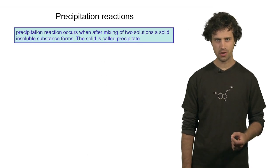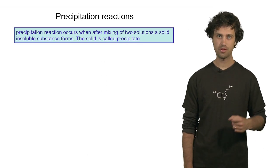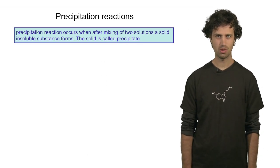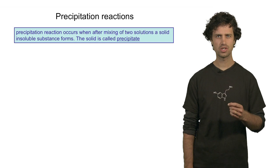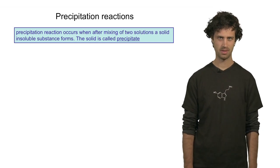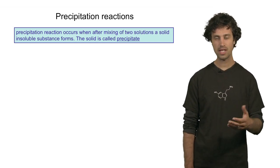Precipitation occurs when, after mixing of two solutions, an insoluble solid substance forms.